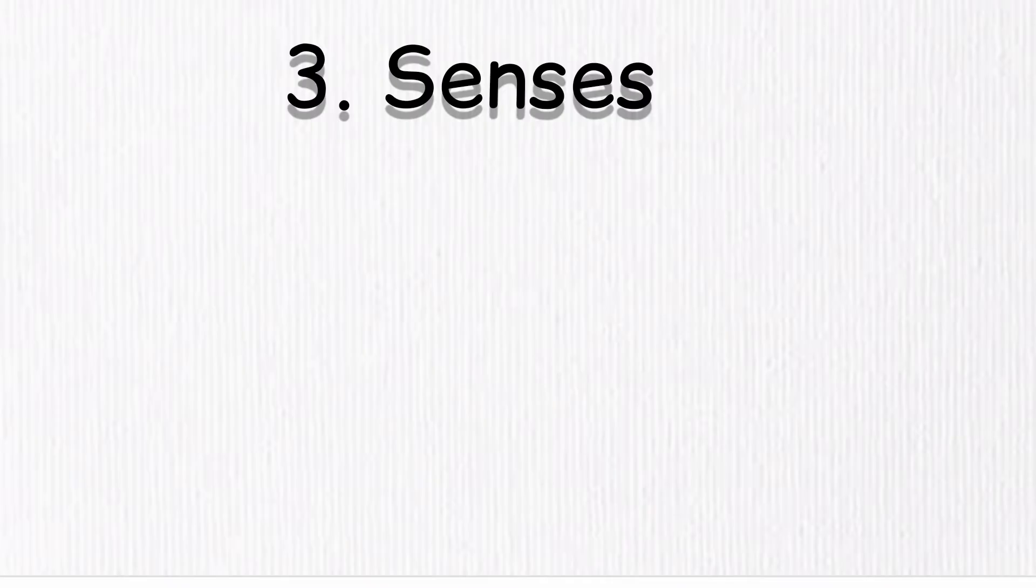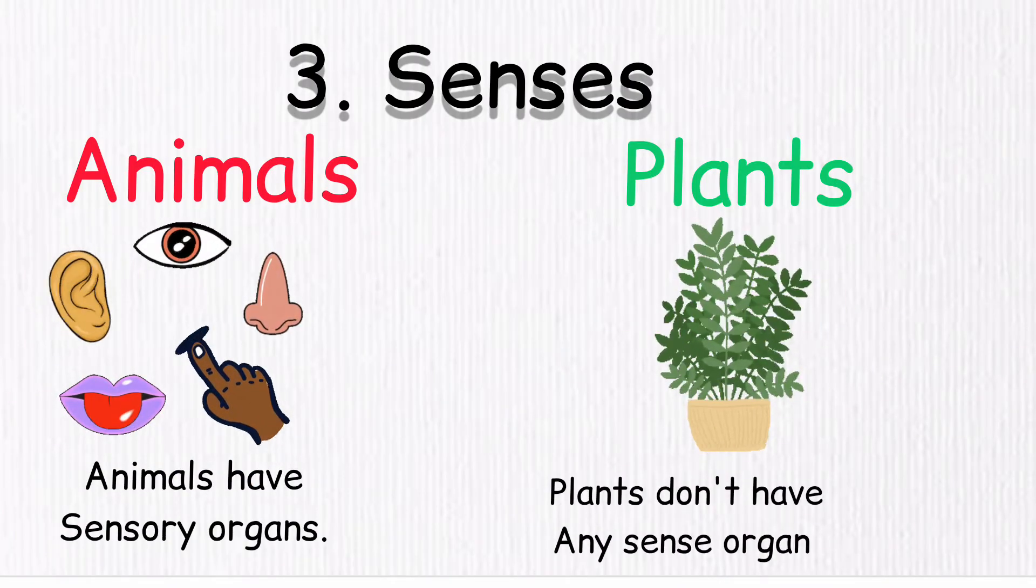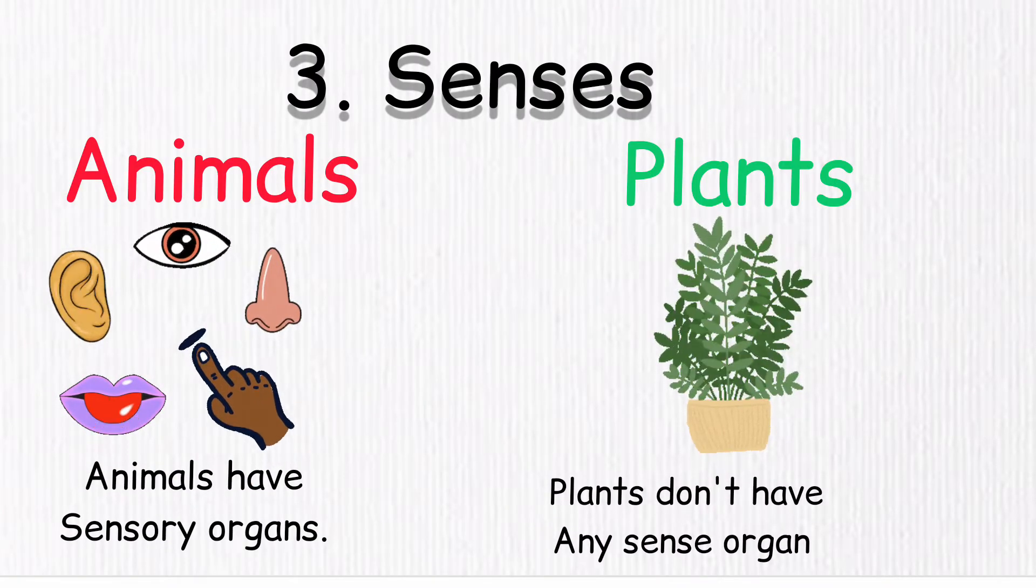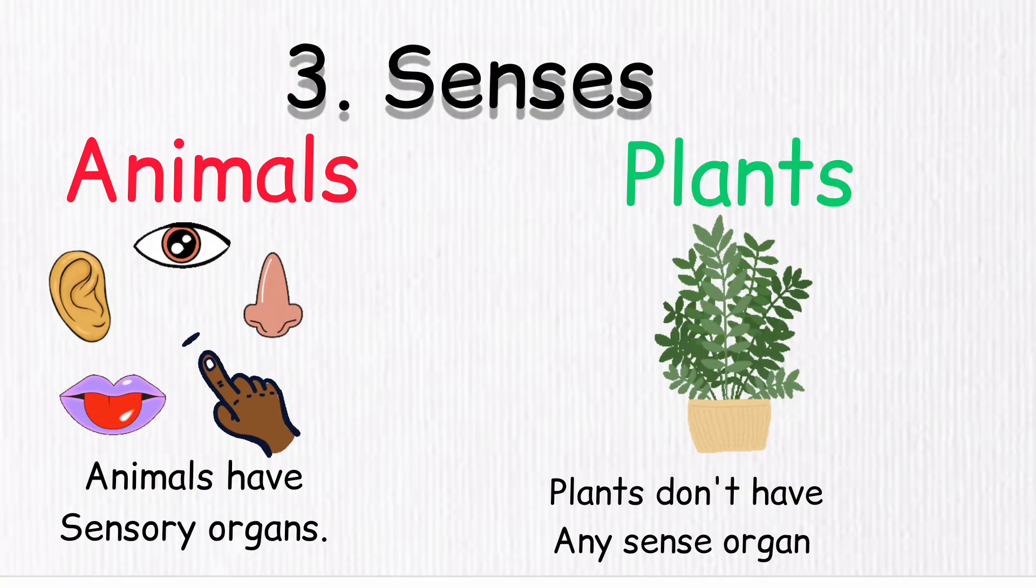Number 3, Sensors. Animals have sensory organs while plants don't have any sensory organs.